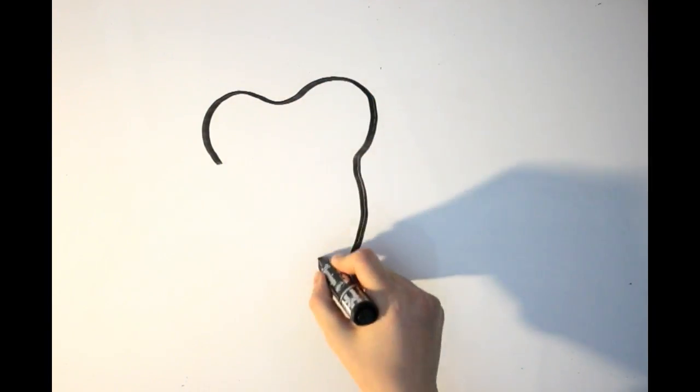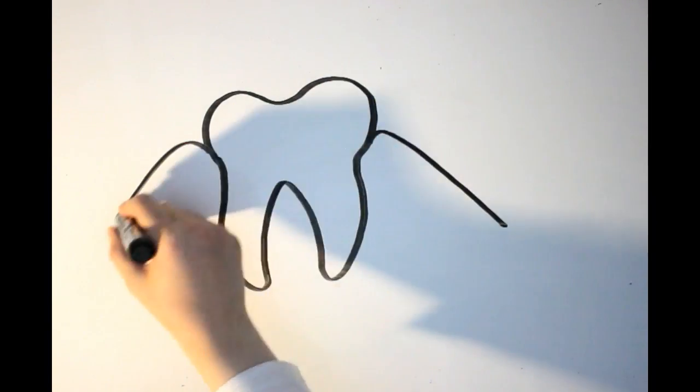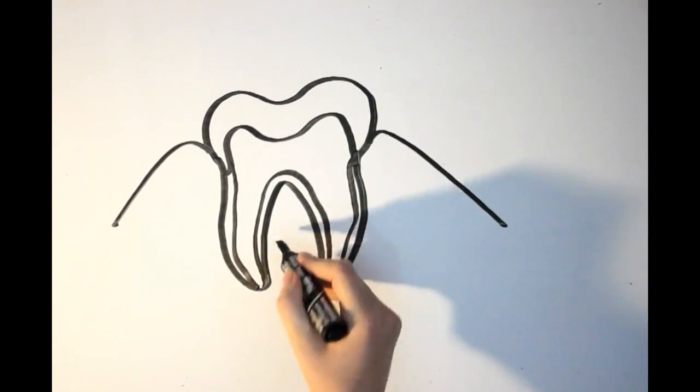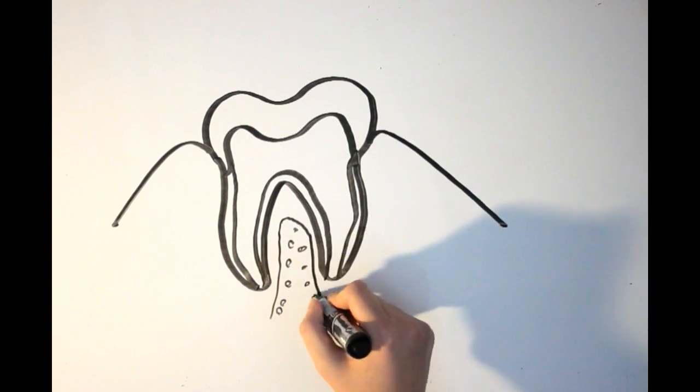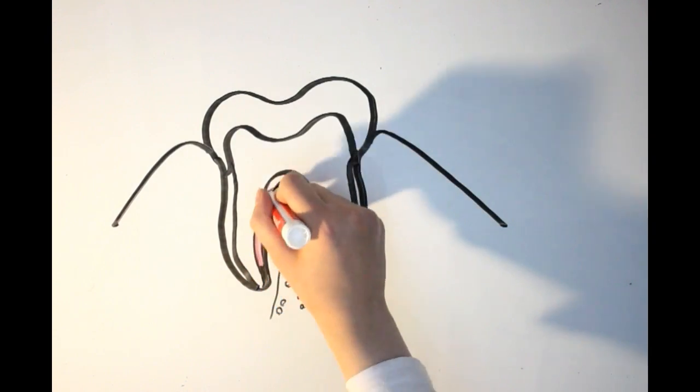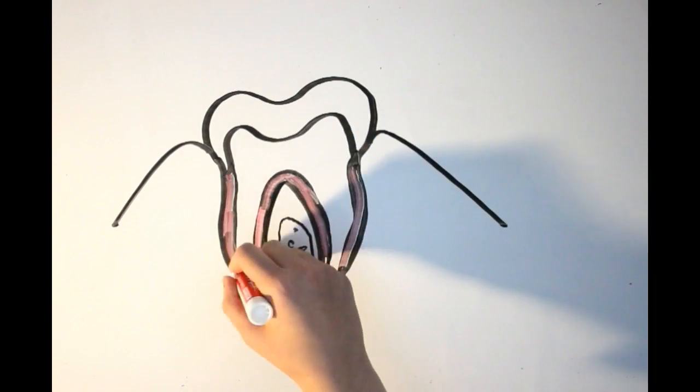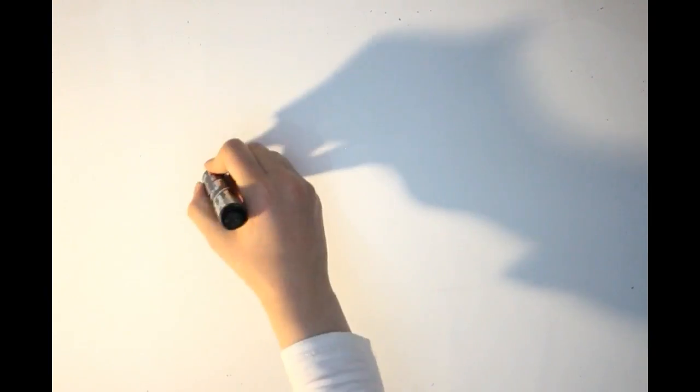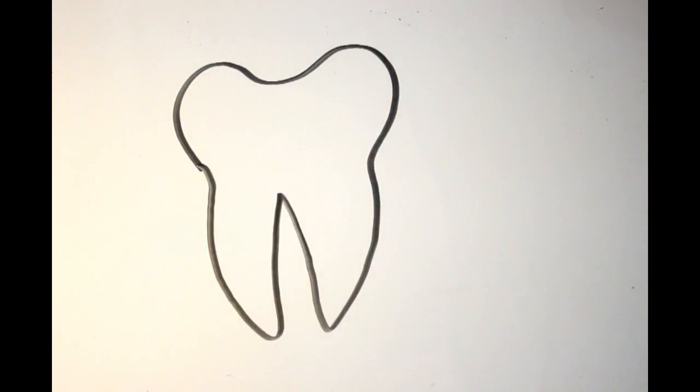Have you ever wondered what holds your teeth in place? The answer is the periodontium, which is made up of cementum, periodontal ligaments, alveolar bone, and gingiva. Let's start by talking about cementum's properties and function. So what is cementum?